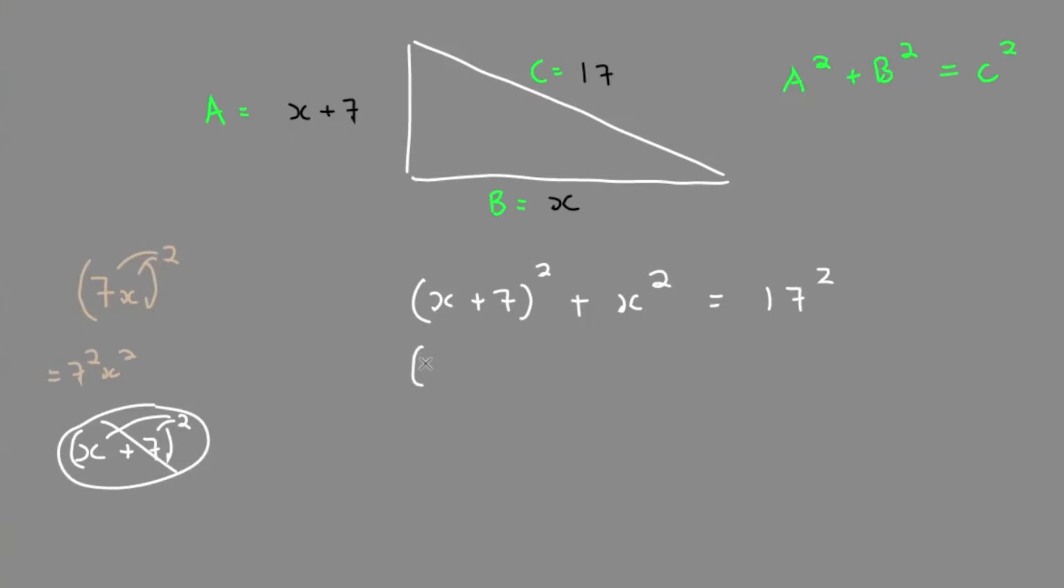We have to FOIL this binomial: x plus 7 times x plus 7. 17 squared is 289.